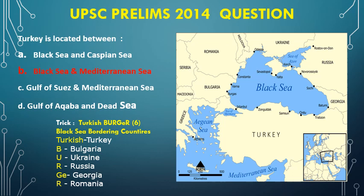Let us see the UPSC Prelims 2014 question. Option D is Gulf of Aqaba and Dead Sea. From our present trick, we know the Caspian Sea is not touching Turkey, so option A is rejected. Now we have only three options. From our past trick, the Black Sea bordering countries were Turkey, Bulgaria, Ukraine, Russia, Georgia, and Romania. So the Black Sea touches Turkey, which may be correct. There is no other option involving the Gulf Sea or Mediterranean clearly, so the answer may be B. But we are not fully sure unless we also know Turkey's Mediterranean coastline from the map. Thank you.